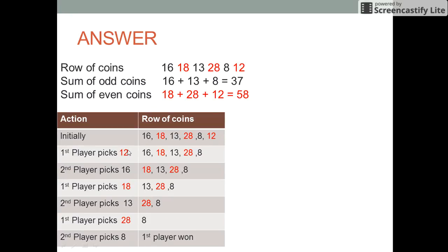In this way, he can ensure that the second player always gets to pick up the odd numbered coins. So the second player would pick up 16. In the next step, the first player picks up 18, then 28, and in the end the first player wins.